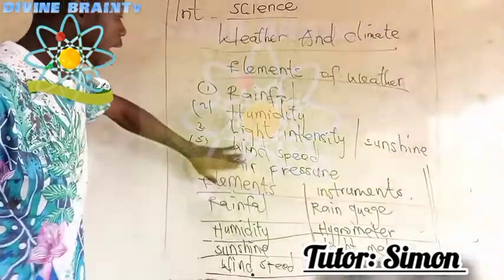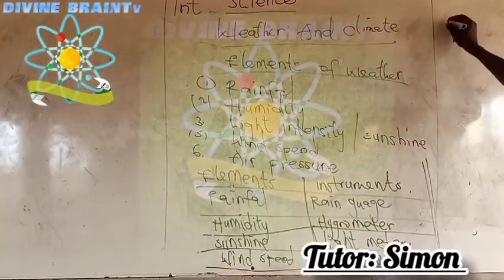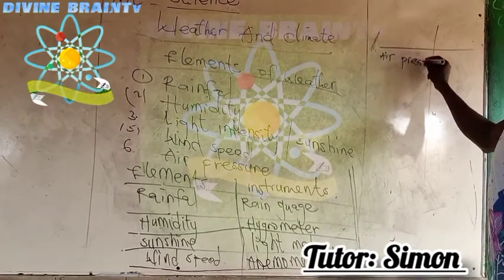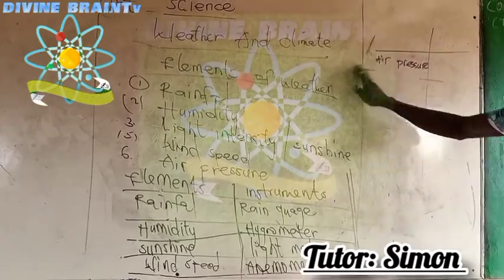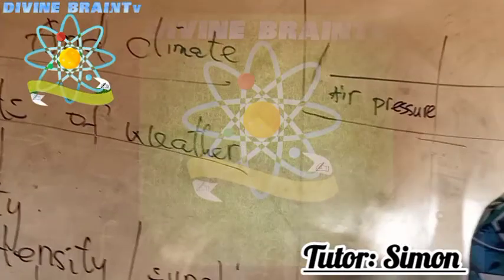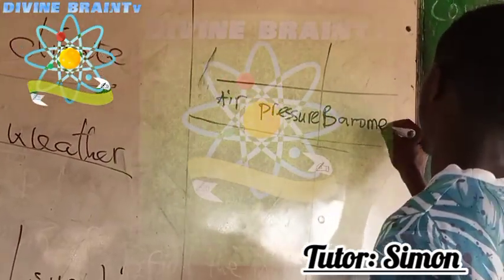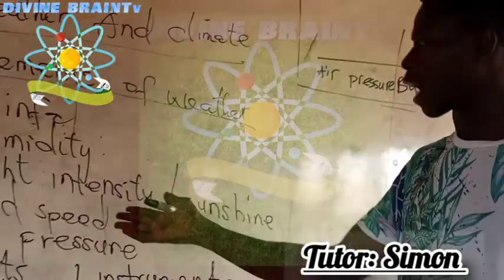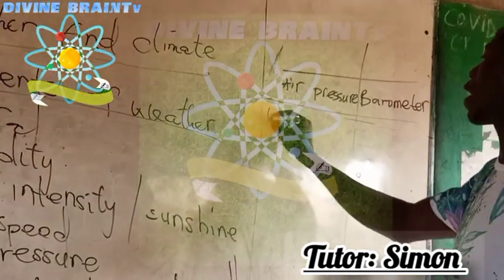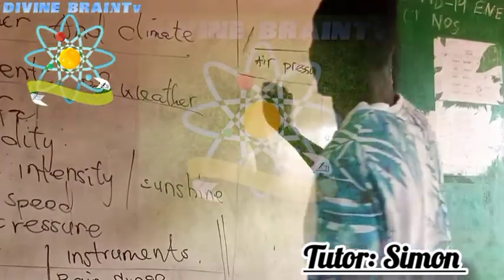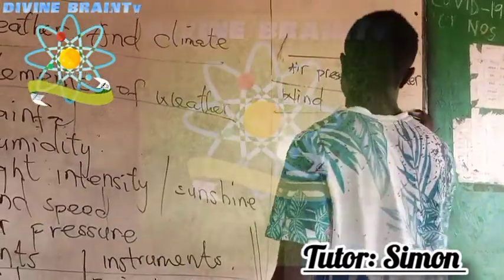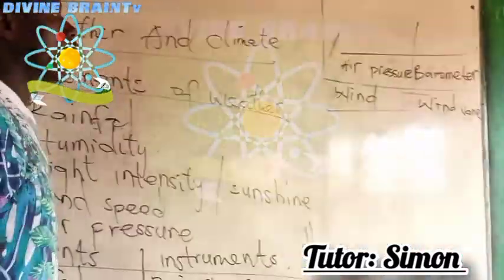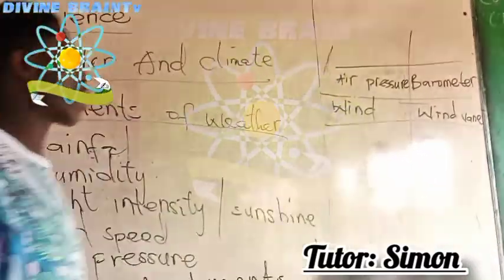Continuing with our table, we have air pressure. The instrument used to measure air pressure is called a barometer. A barometer is an instrument used to measure air pressure. The last element is wind direction, and the instrument used to measure it is called a wind vane.